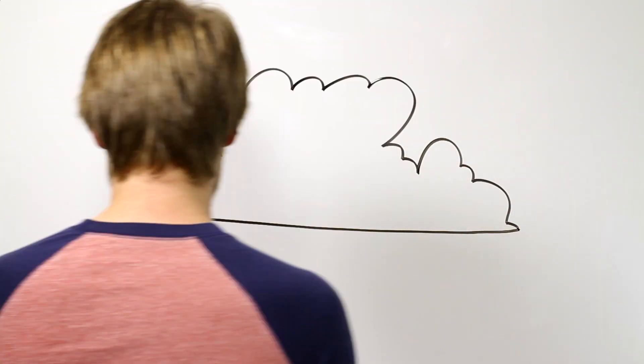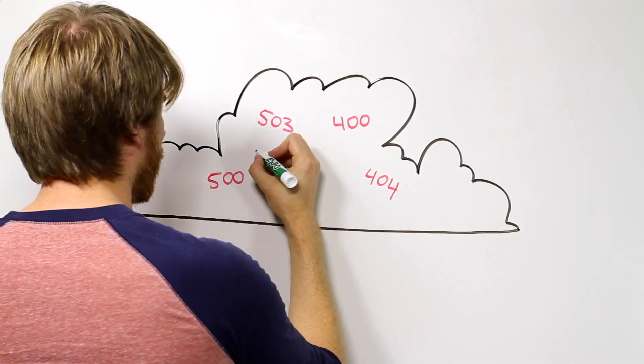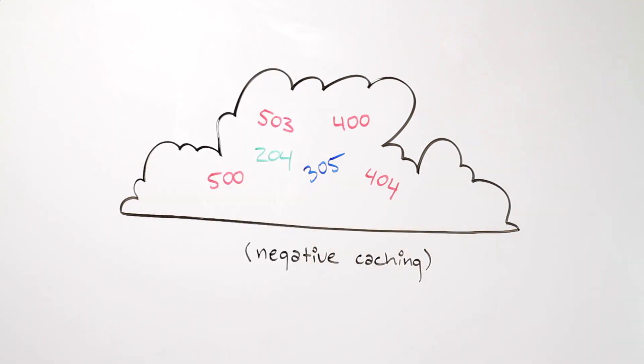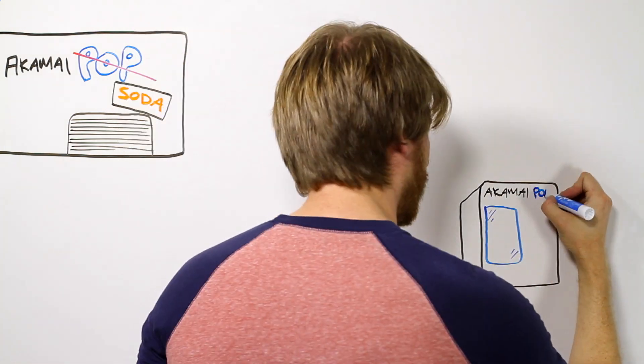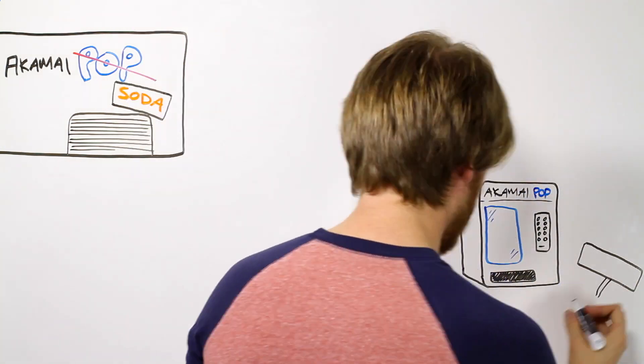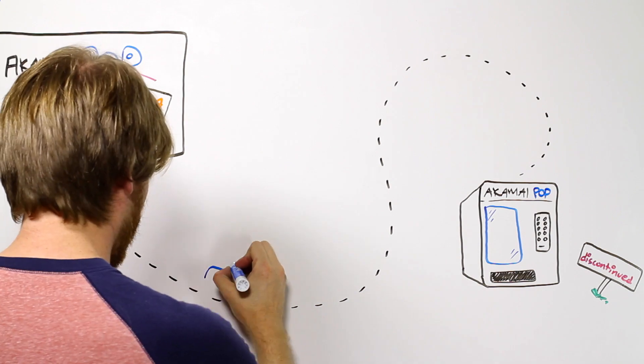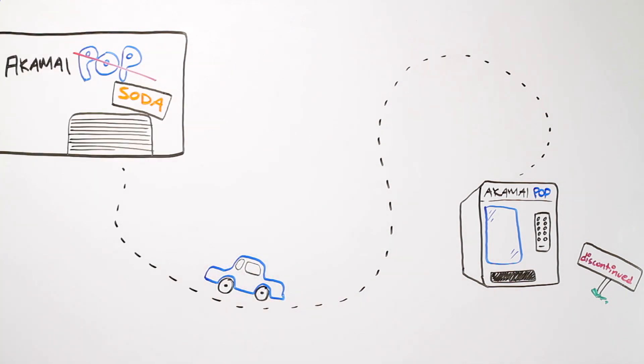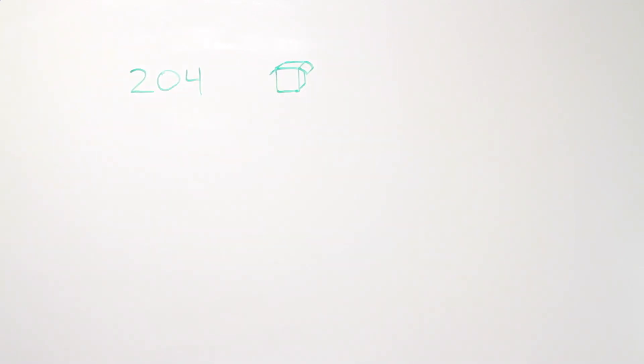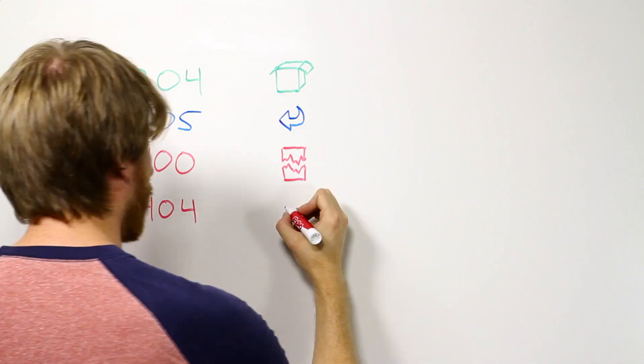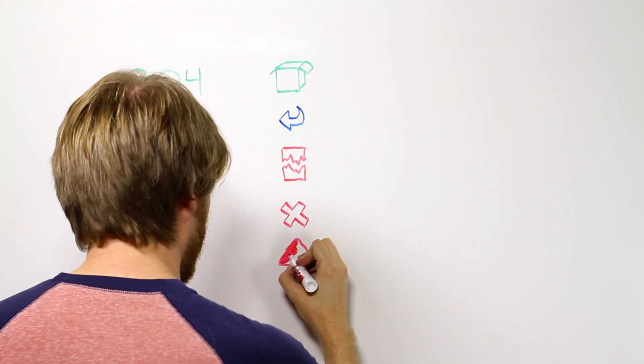So next, let's talk about the concept of caching certain HTTP response codes. It's sometimes called negative caching. The idea here is if the soda factory has stopped making Akamai Pop, we'd like to be notified at the vending machine before we drive all the way to the factory and knock on their door. Basically, we're going to cache the following error codes: 204, 305, 400, 404, and all 500s.